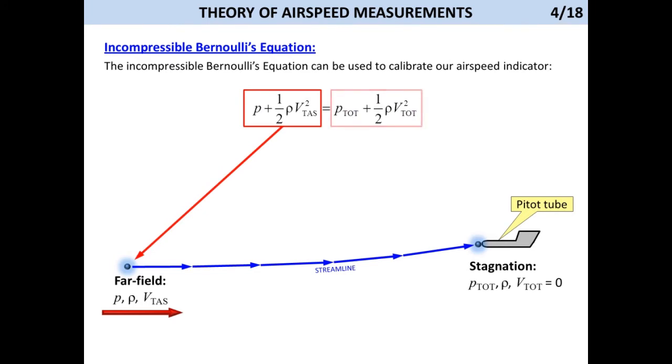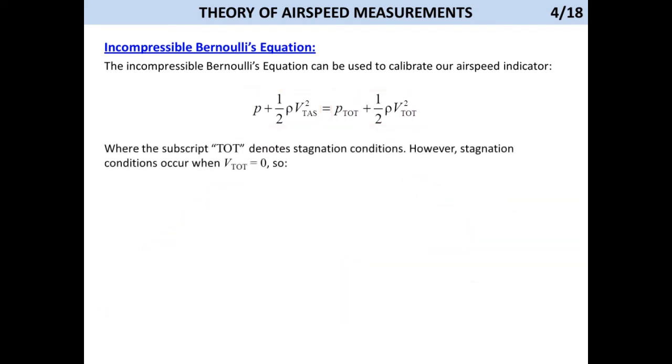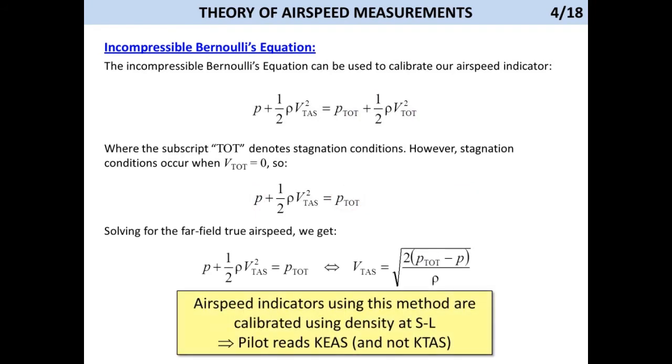The one to the left of the equal sign is the energy state in the far field, and the one to the right is the energy state at the opening of the pitot tube. I will refer to it using TOT to indicate the total pressure, which here is the stagnation pressure. Stagnation pressure means that the airspeed denoted by V tot is zero. This allows us to simplify the equation. Therefore, if we know the difference between the total and the far field static pressure P, we can calculate the true airspeed required to generate it.